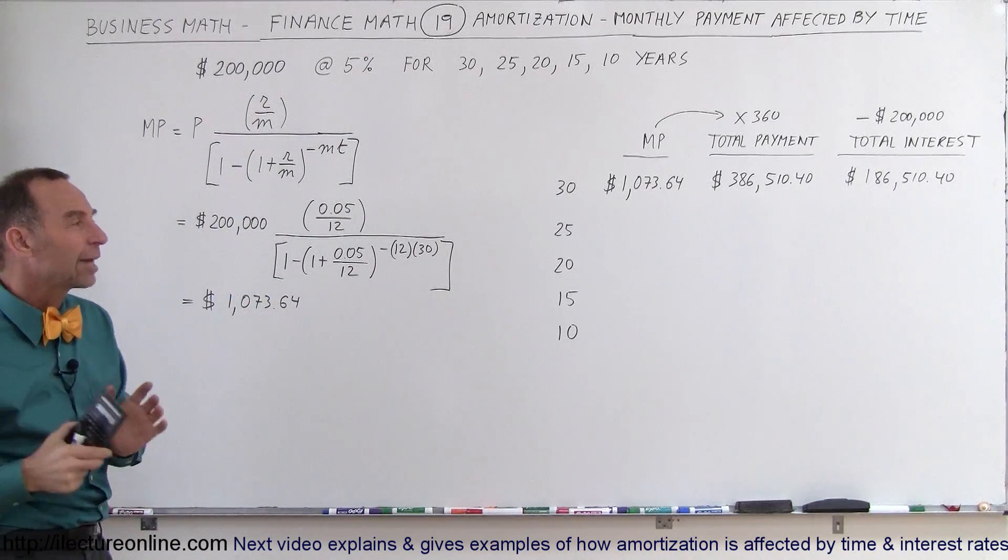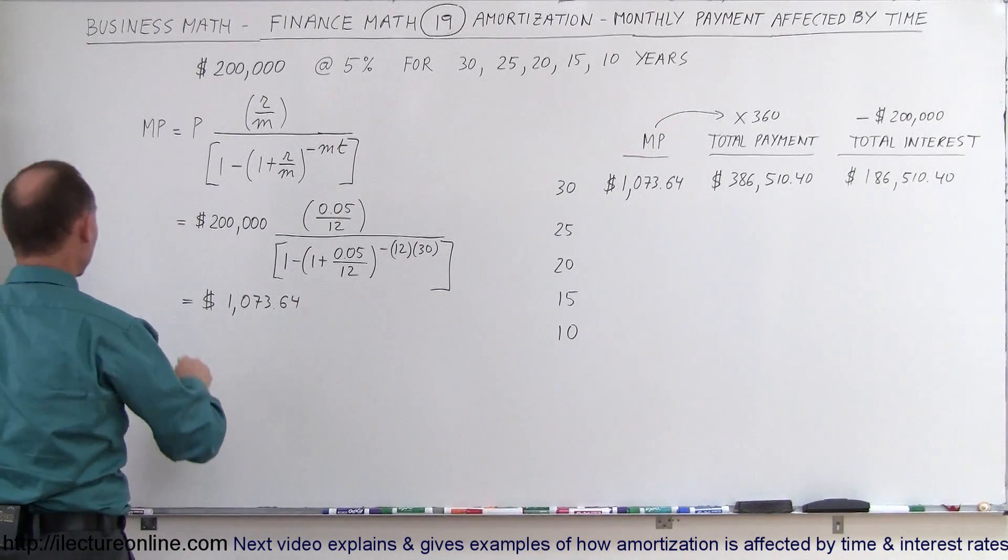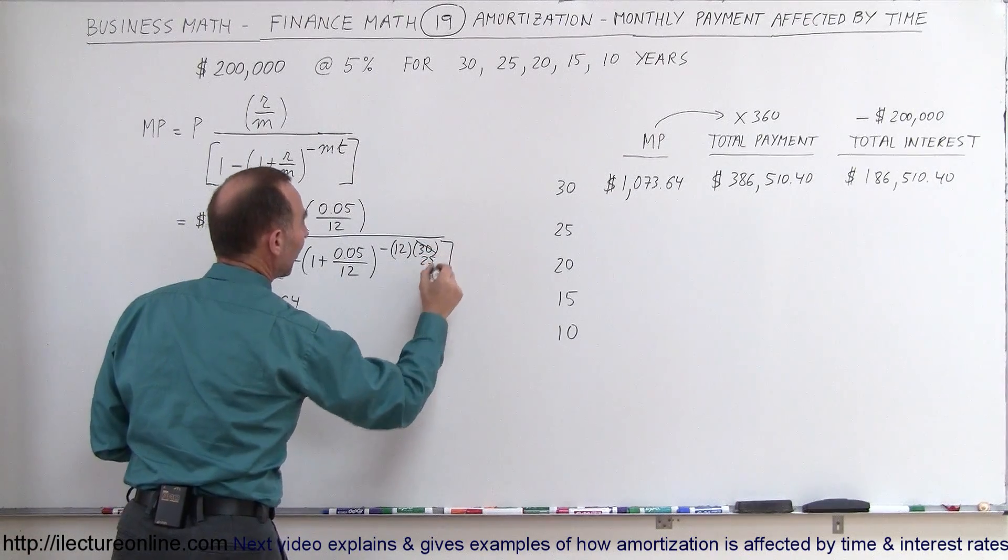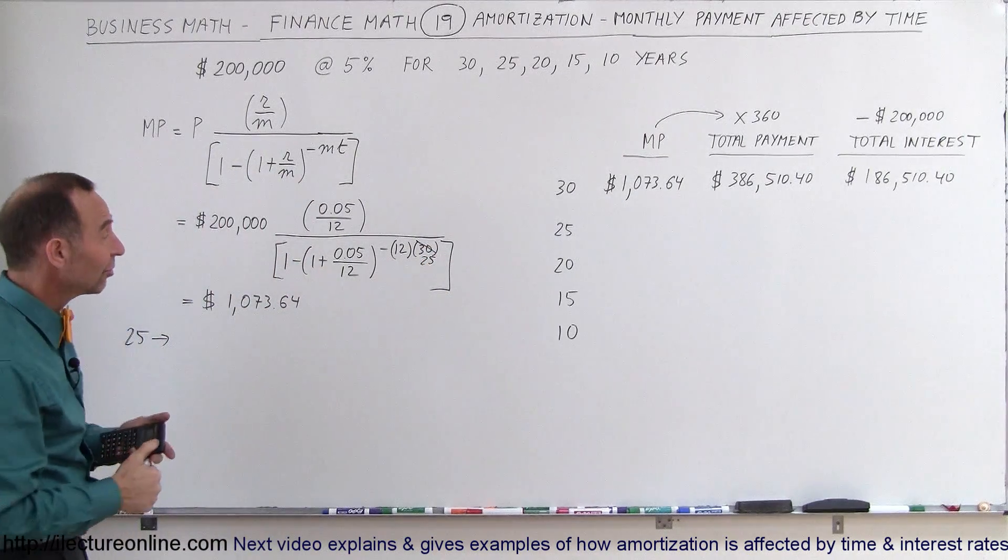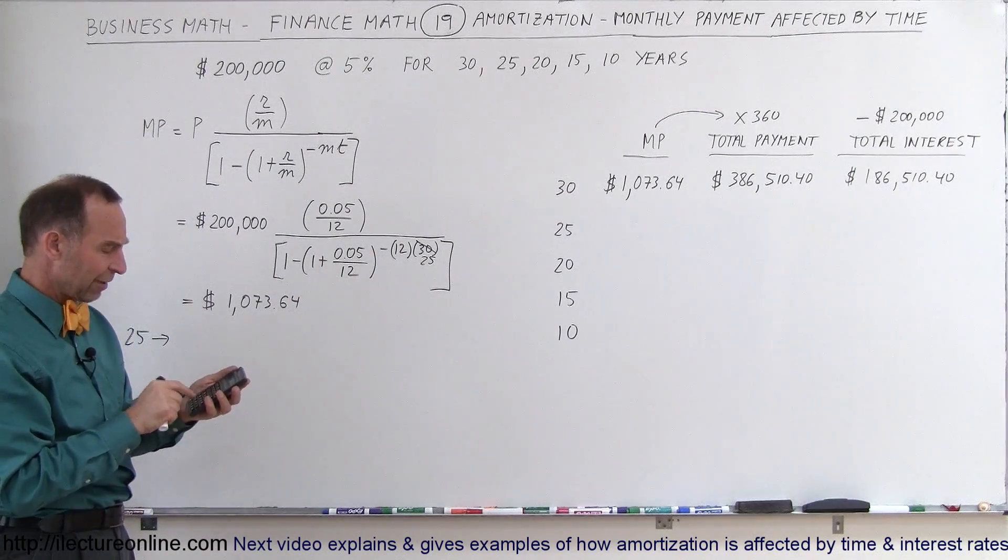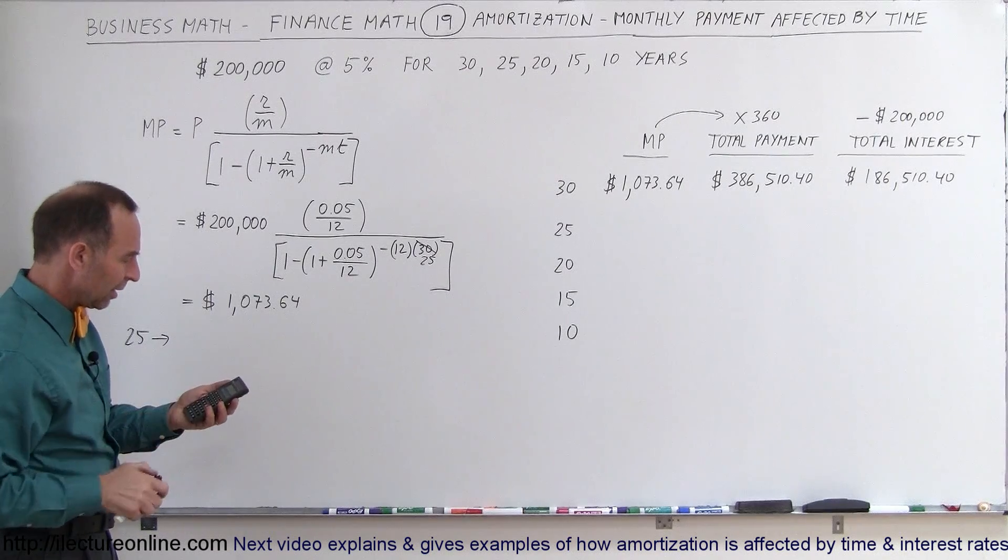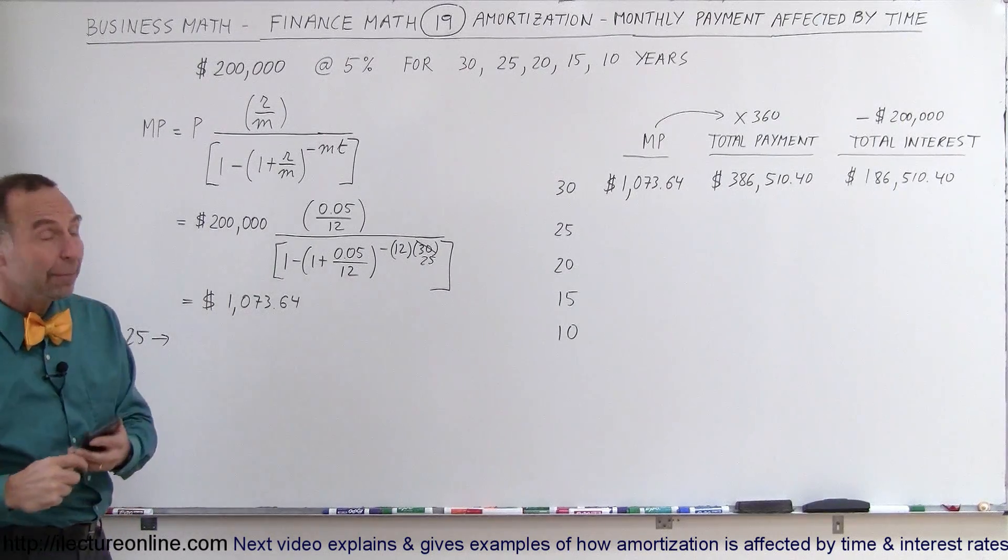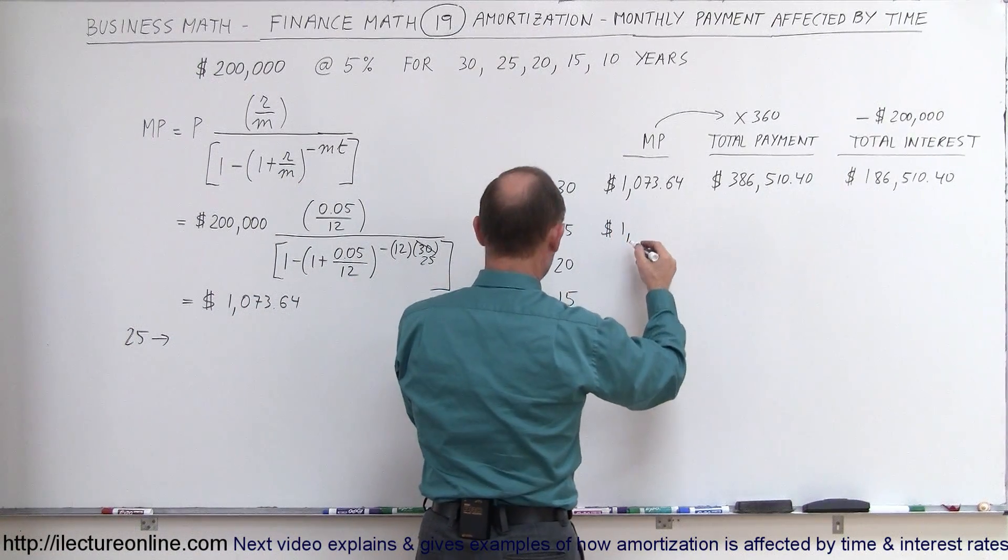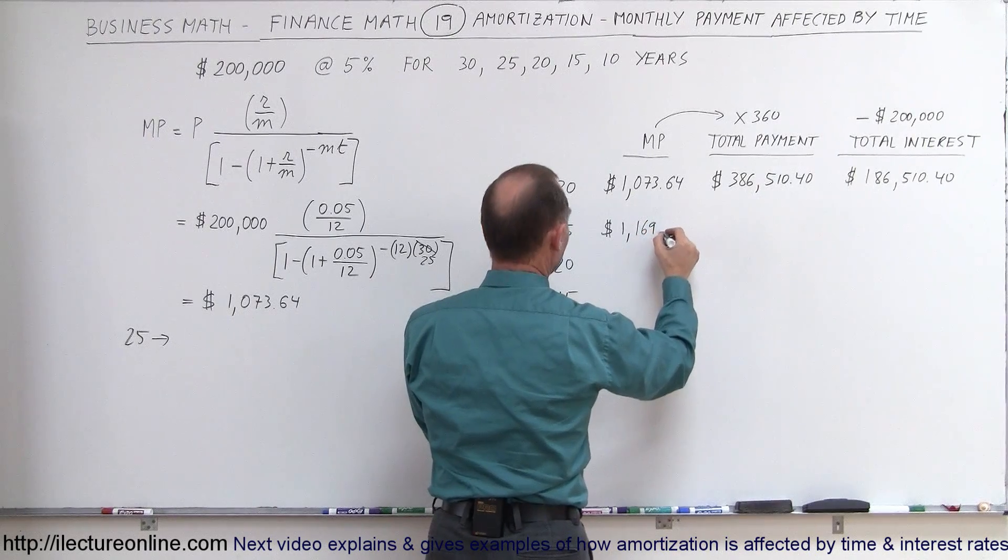But what if you wanted to try to pay back in a shorter period of time, only 25 years? So what would happen then? For a 25-year period, the 30-year would then change to a 25. Everything else would stay the same. Starting from here, we go 0.05 divided by 12, and then times 200,000, and now your payments have gone up. Instead of $1,073, you will now pay per month $1,169.18.